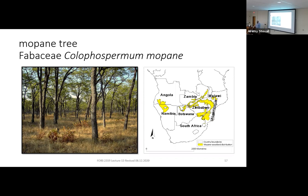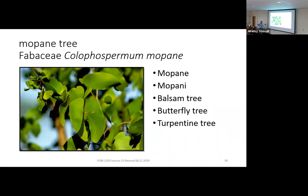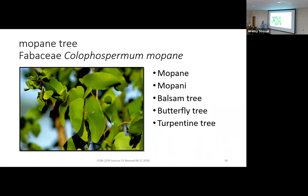It's also called the Butterfly Tree because it has bifoliate leaves — each compound leaf has two leaflets shaped like butterfly wings, making it super easy to identify. Other common names include Balsam Tree or Turpentine Tree. The leaves are flecked with little glands, and if you crush them they smell strongly of turpentine, similar to our sweetgum. Those chemicals discourage herbivory — many insects and herbivores avoid the foul, nasty-tasting and potentially toxic leaves.